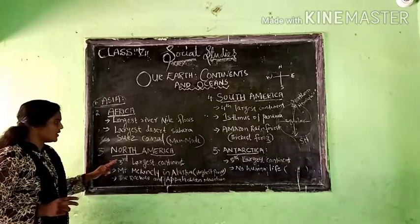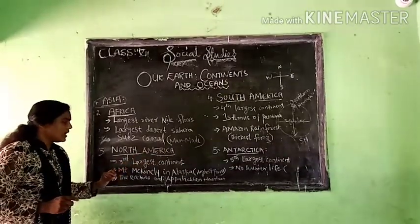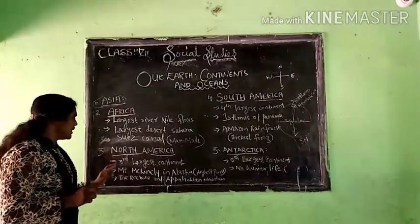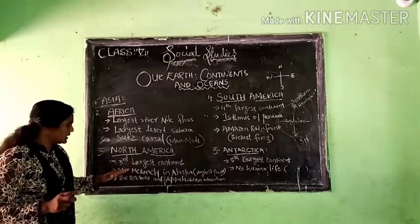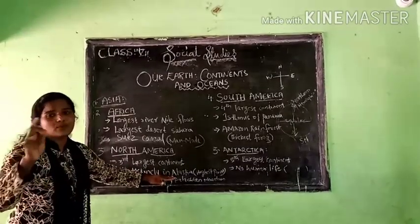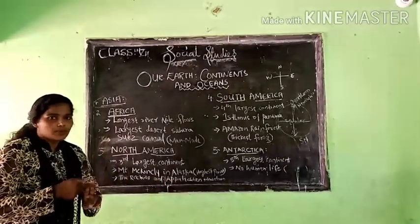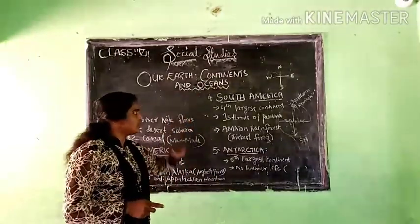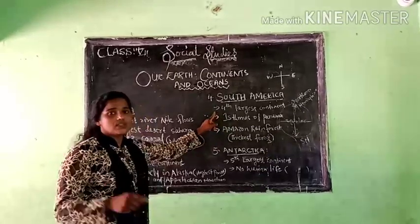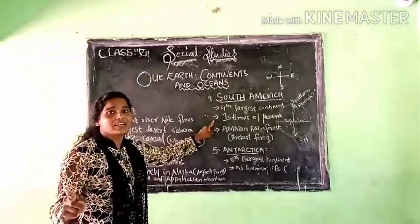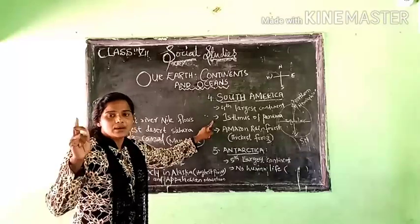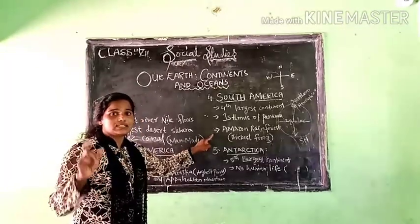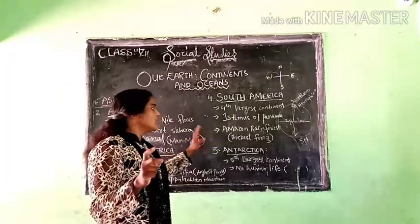The third largest continent is North America, situated in the Northern Hemisphere. Its speciality is Mount McKinley in Alaska — the highest point in North America — along with the Rockies and the Appalachian mountains. The fourth largest continent is South America. The Isthmus of Panama connects North America and South America, and the Amazon Rainforest, the thickest rainforest in the world, is in South America.